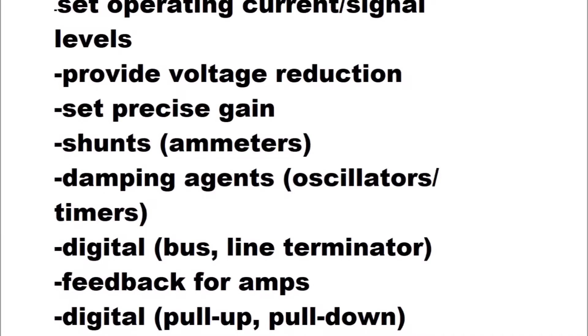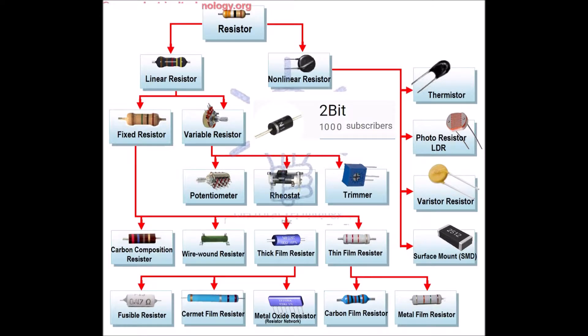From the textbook, resistors are used to set operating current and signal levels in circuits, provide voltage reduction, set precise gain values in precision circuits — that sounds like op amps — act as shunts in ammeters and voltage meters, behave like damping agents in oscillators and timer circuits, act as bus and line terminators in digital circuits, provide feedback networks for amplifiers, and act as pull-up and pull-down elements in digital circuits. But unless you know what all of those are, it's not very meaningful.